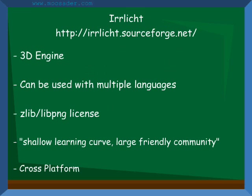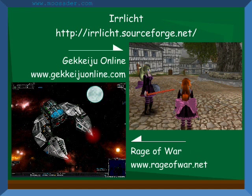Irrlicht — or however it's pronounced, I don't know — is a 3D engine. It can be used with a lot of languages, including C++ and .NET languages. According to the Wikipedia entry, it is known for a shallow learning curve and a large friendly community. It is cross-platform and its license is based upon the Zlib LibPNG license. Some games made with it are Gekeju Online and Galactic Dream: Rage of War.